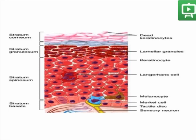Here is a section of keratinized epithelium composed of stratum corneum, stratum granulosum, stratum spinosum, and stratum basale.